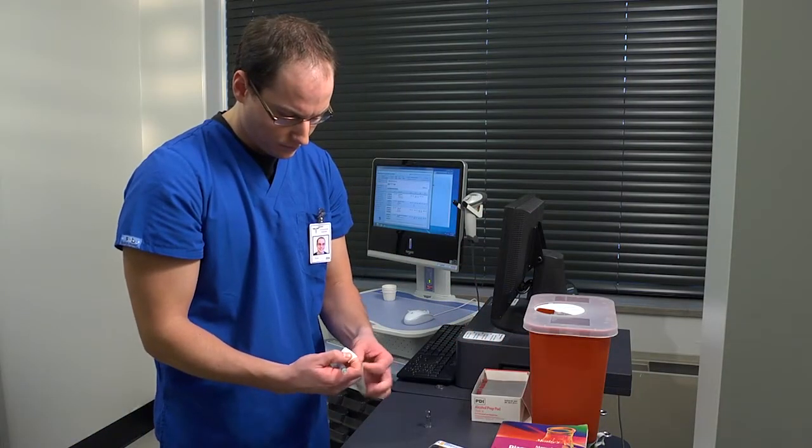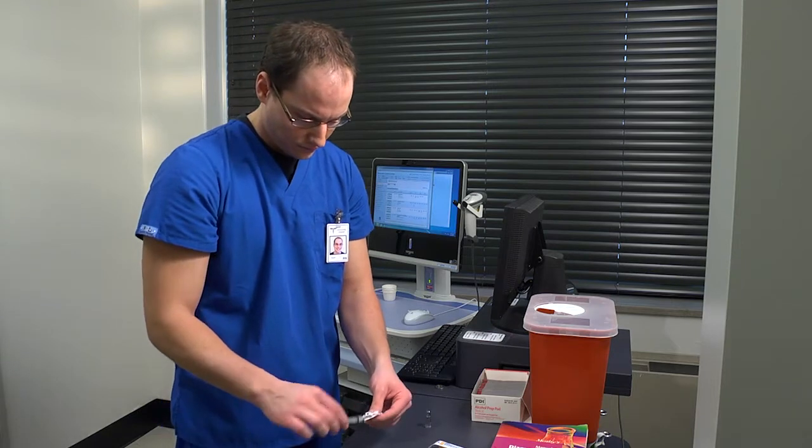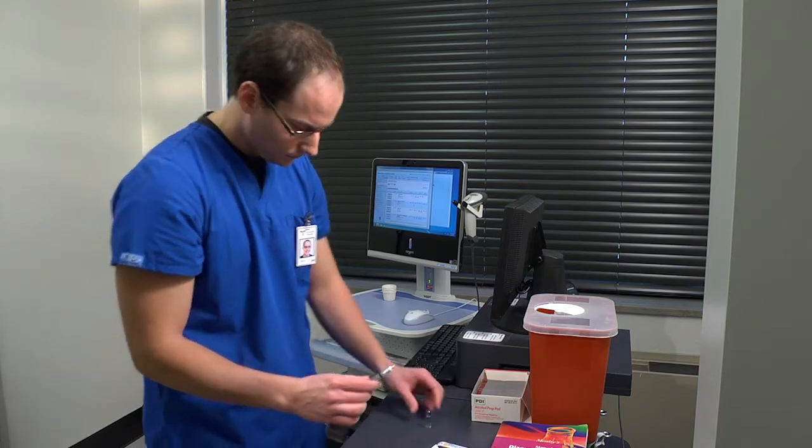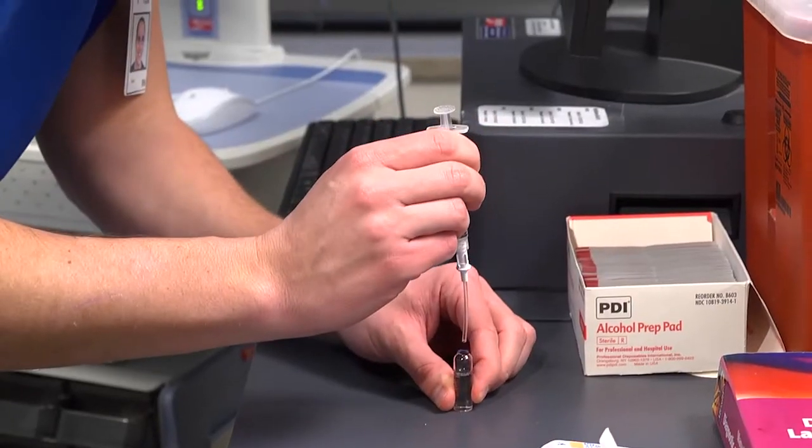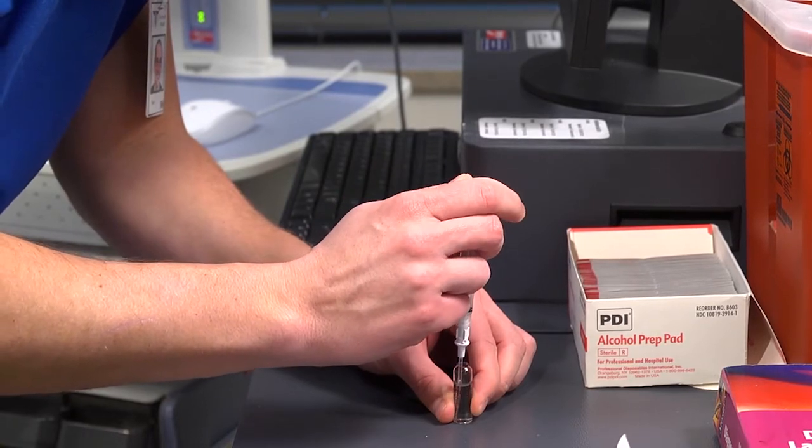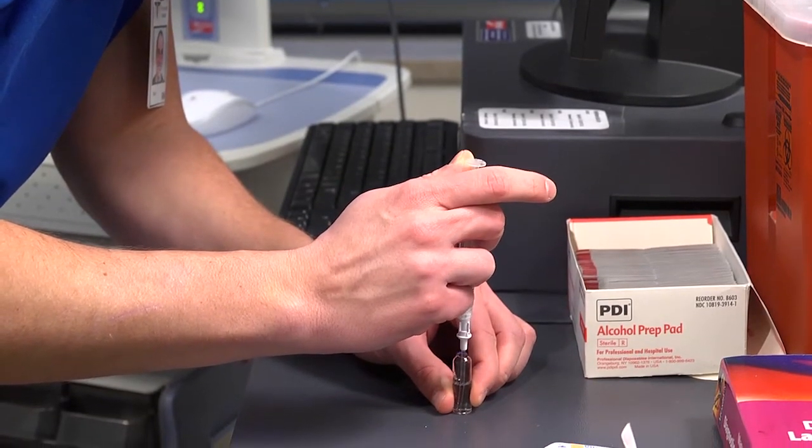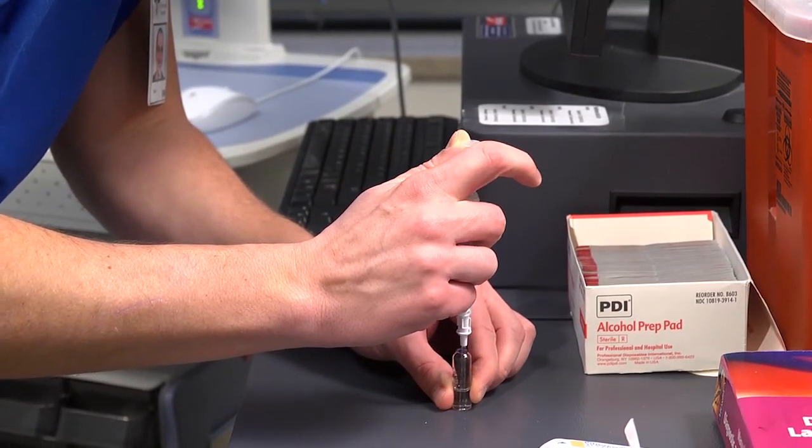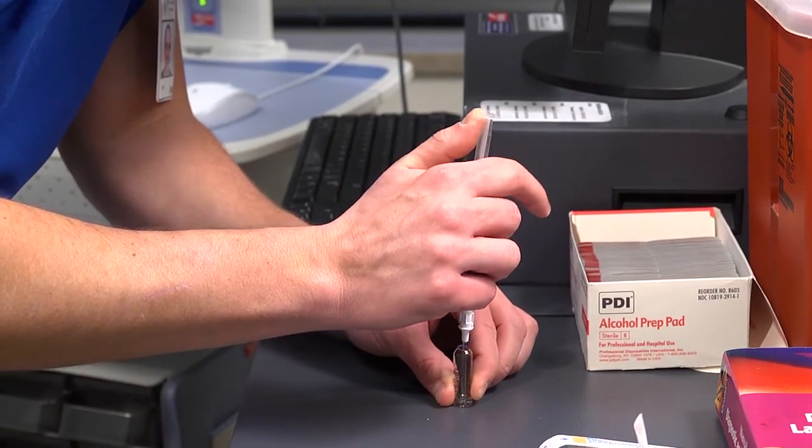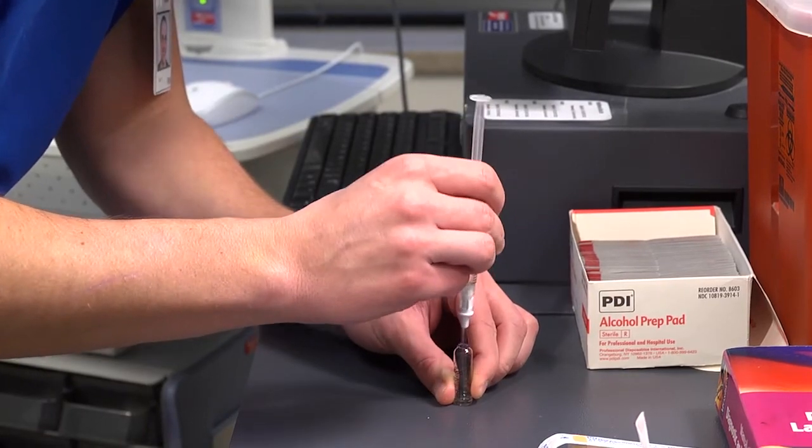Now you're ready to draw up the medication. Choose a filter needle or filter straw long enough to reach the bottom of the ampoule and attach to an appropriately sized syringe. Rest the ampoule on a flat surface and quickly draw the contents into the syringe. Gently pull back on the plunger to aspirate the medication, keeping the tip of the needle under the surface of the liquid.